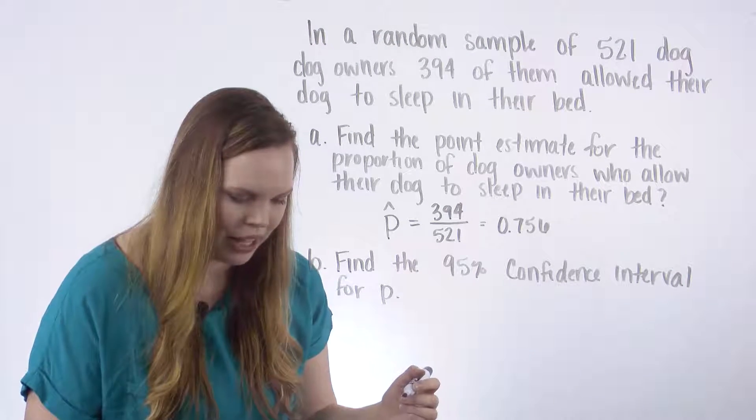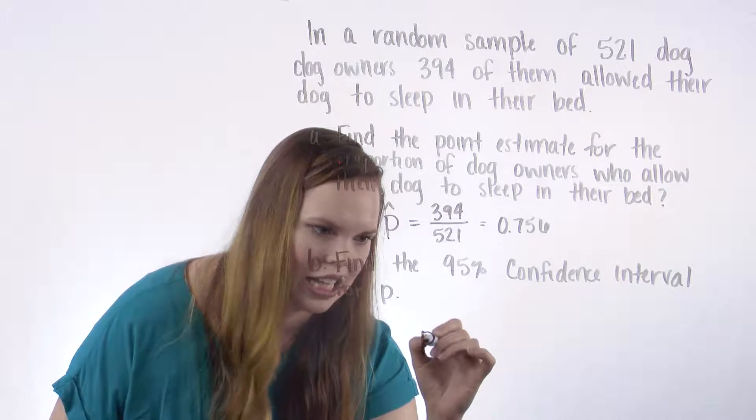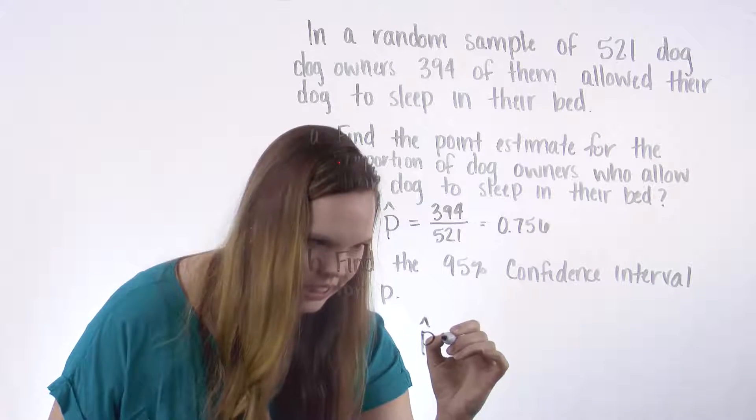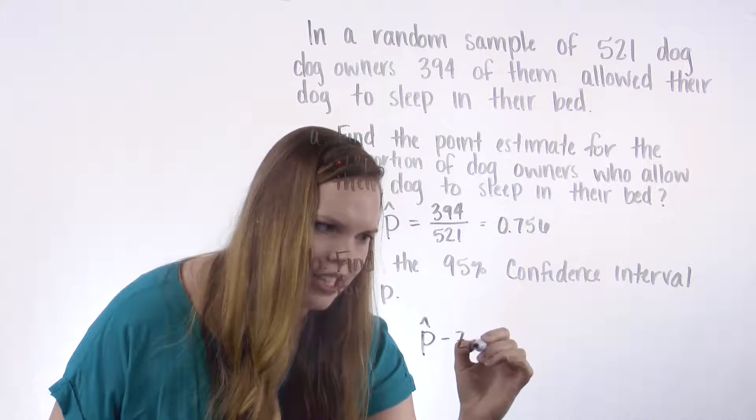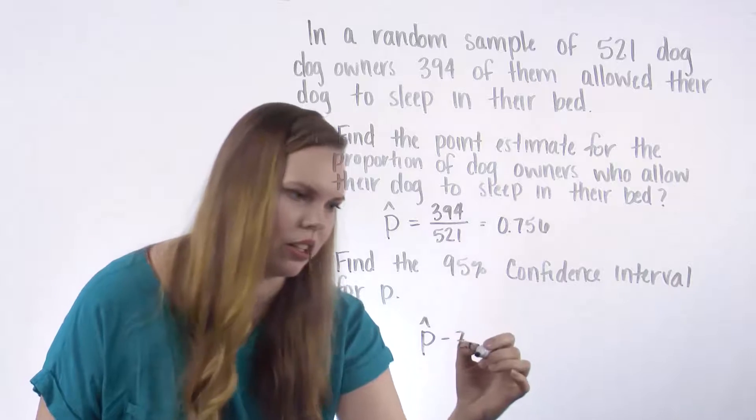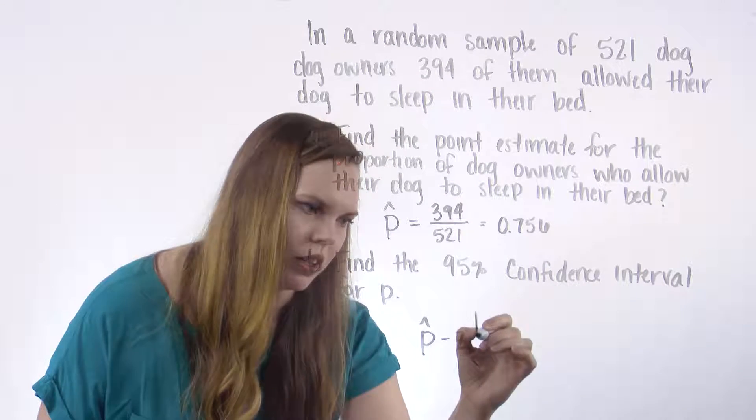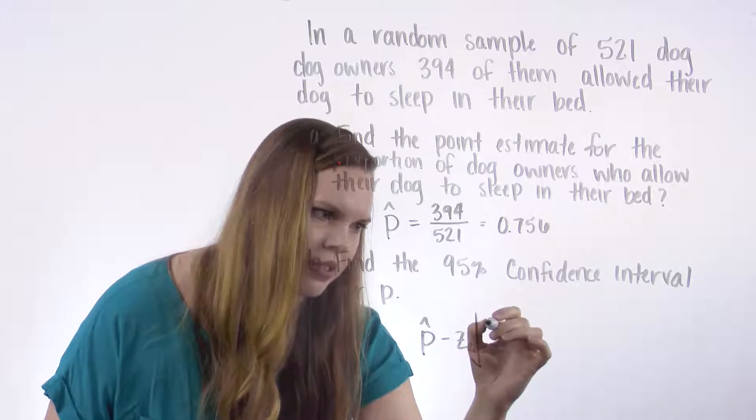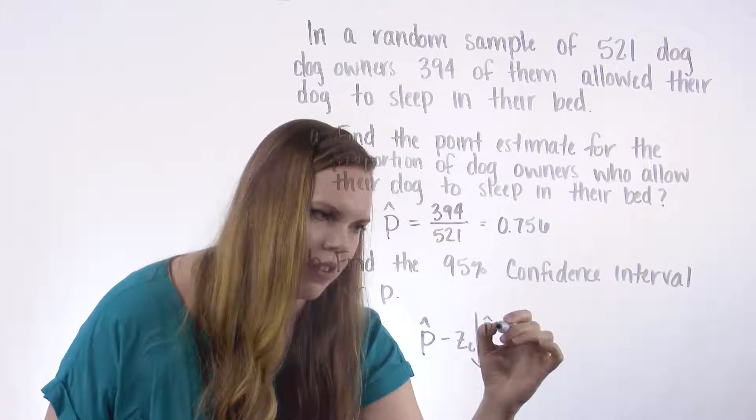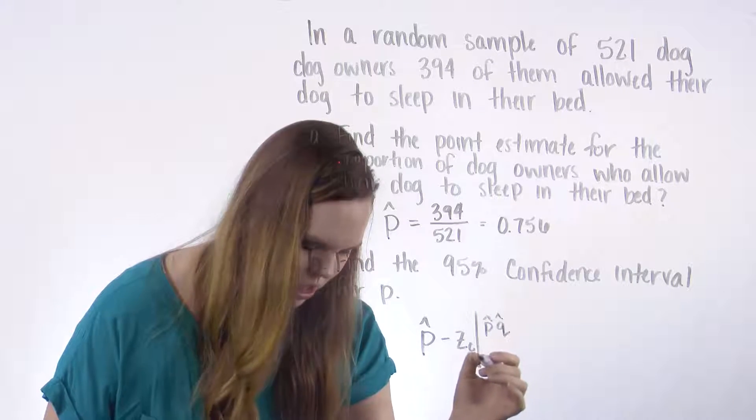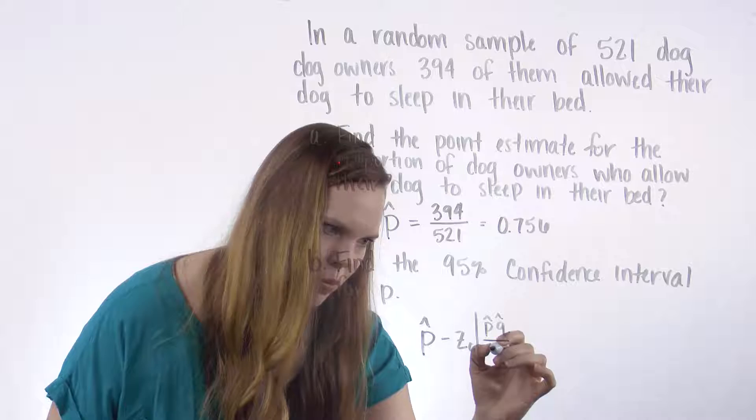And it is P hat minus Z sub C. This is normally distributed. We learned that the binomial and the normal are very closely related. So the proportions of samples are also normally distributed. So we can use the normal distribution here.